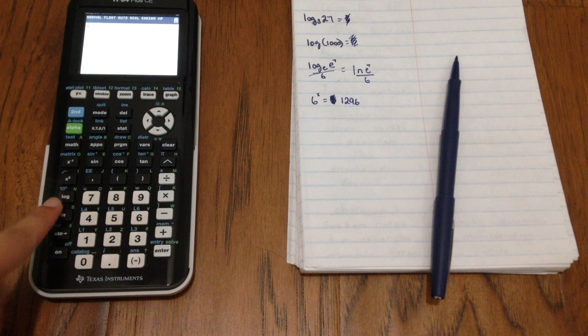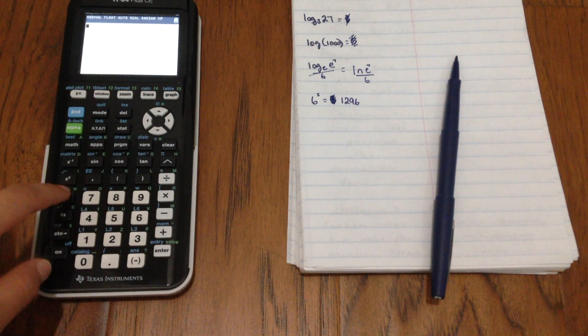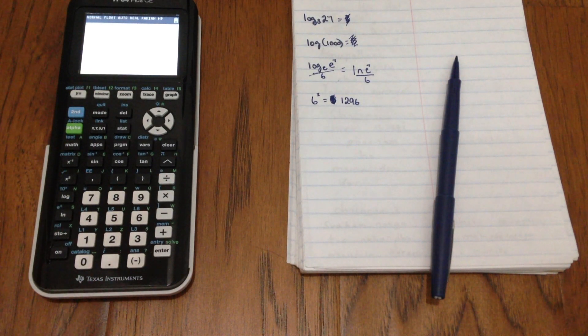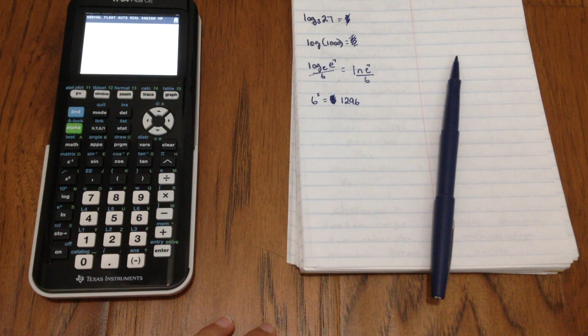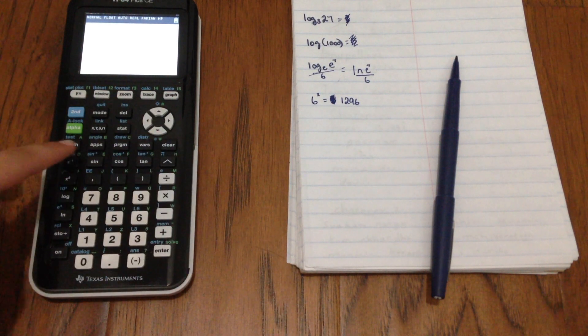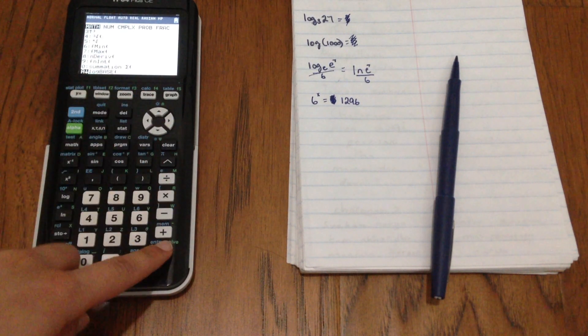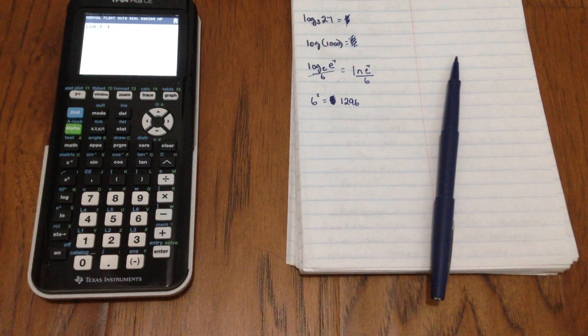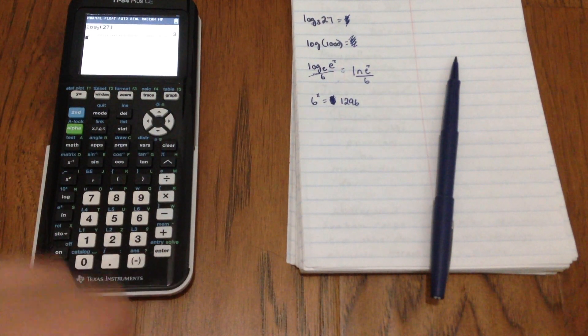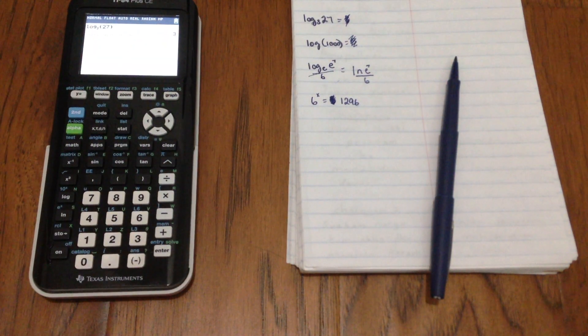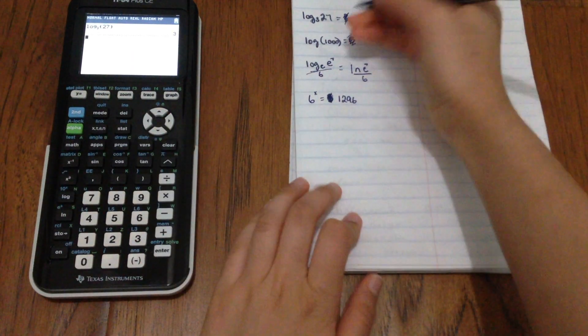you can notice right away that there is a log button and there is a button for natural logarithms. But this log button does not allow you to enter in a certain base. It's automatically base 10. So the way you would enter it if you wanted to do it with a different base is you would go to math and you would scroll down to log base and click enter. And then you would enter in your base and enter in number and you would get your answer. So we can see that our answer here would be 3.